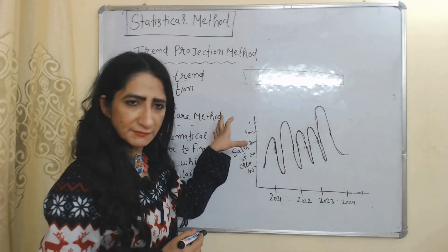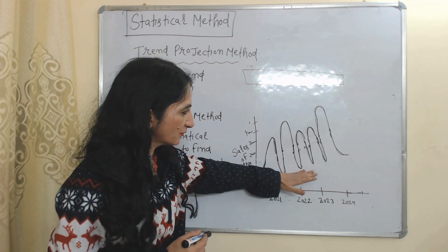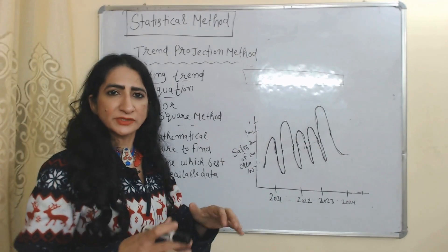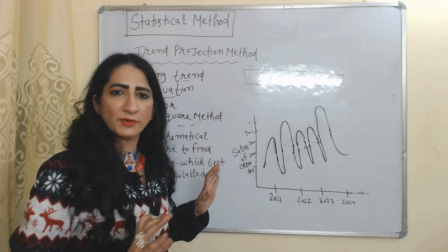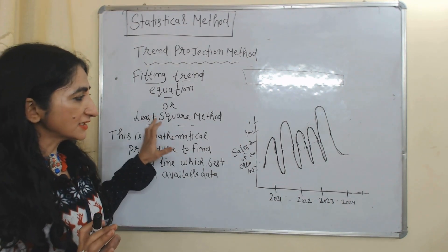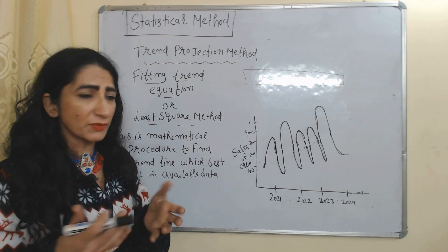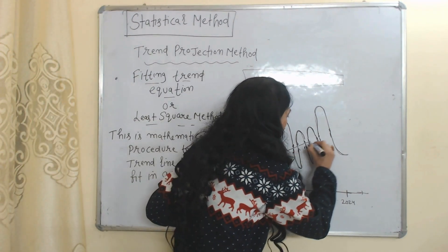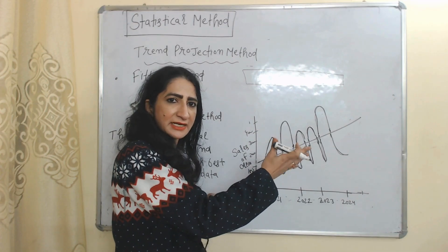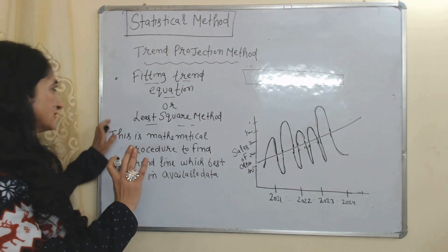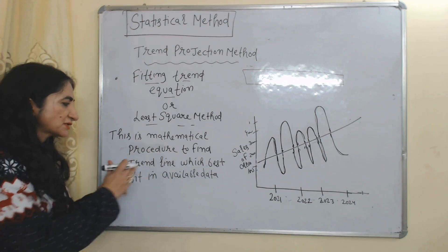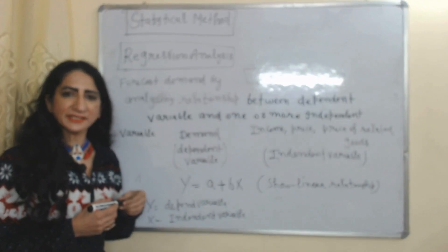Sometimes trends are very confusing and we are not able to predict demand using the graphical method. That's why we use the least squares method. This method uses mathematical formulas to find one best-fit trend line. With the help of this trend line, we can analyze past data and predict future demand. The least squares method is a mathematical procedure to find the trend line that best fits the available data.